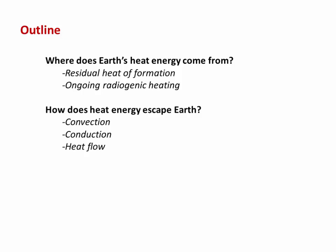In this video, we're going to look at a couple of things: where does the heat energy to drive this process come from? We're going to look at two things — the residual heat of formation from when Earth formed 4.6 billion years ago, and also the effect of ongoing radiogenic heating. Then in the second part of the video, we're going to look at how that heat energy actually escapes from Earth, through the two main processes of convection and conduction.